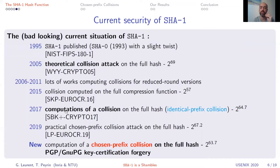Two years later came the first collision on the full SHA-1 hash function — not just the compression function — requiring 2 to the 64.7 computations, introduced by CWI and Google. This is called an identical prefix collision. Gaëtan Laurent and I worked on a more powerful type called a chosen prefix collision, which is harder to find for an attacker. Last year we proposed a chosen prefix attack at 2 to the 67, and in this work we improve it to 2 to the 63.7 computations.